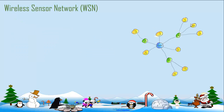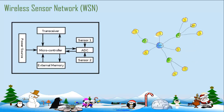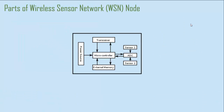When we deploy these sensors in any area of interest, they are scattered and they form a network — that's why it's called a Wireless Sensor Network. Each sensor can play a role, which we will discuss in a later video. Each sensor node consists of components including a transceiver, power source, microcontroller, and external memory, which we will discuss one by one.